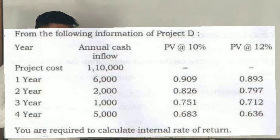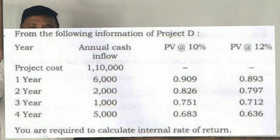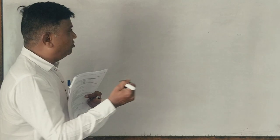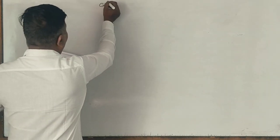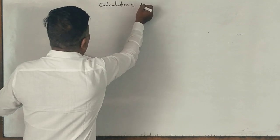Present value at 10%, present value at 12%. Both arguments. Yes or no? Sorry. What is asked? You are required to calculate internal rate of return. Very simple formula I will show you. Okay? Nobody will show you this formula. I will show you this. Okay? Now, calculation of IRR.